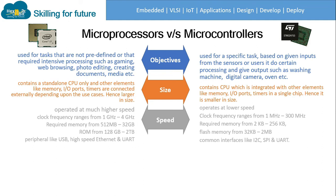Regarding speed: microprocessors operate at much higher clock frequencies ranging from 1 GHz to 4 GHz, require RAM from 512 MB to 32 GB, ROM can extend from 128 GB to 2 TB, and common interfaces include USB, high-speed Ethernet, and UART. Microcontrollers operate at lower clock frequencies ranging from 1 MHz to 300 MHz, require very little memory — 2 KB to 256 KB RAM, 32 KB to 2 MB flash — and common interfaces include I2C, SPI, and UART.